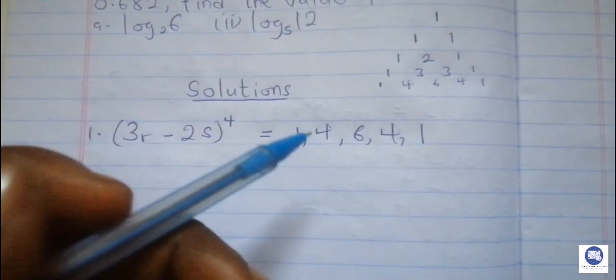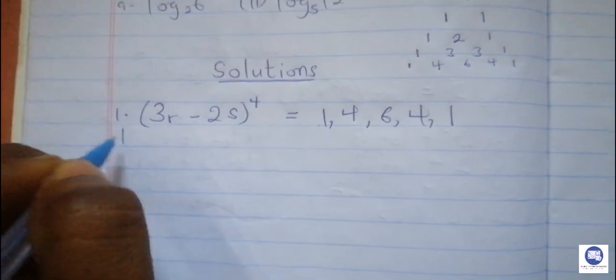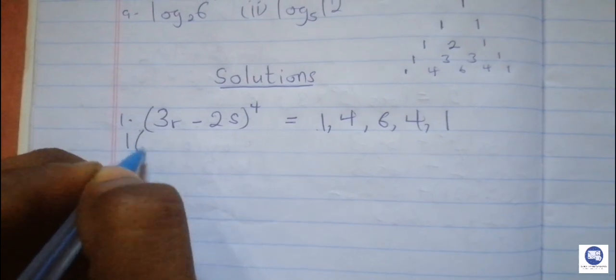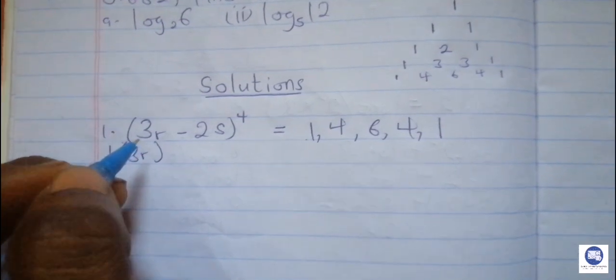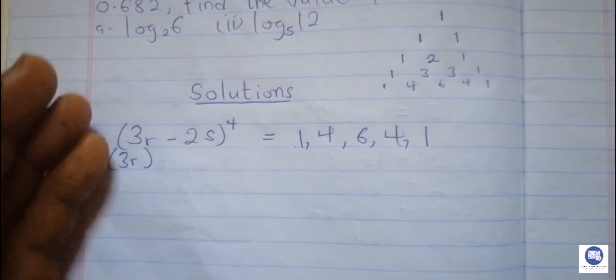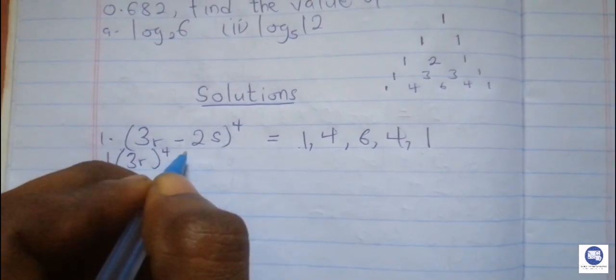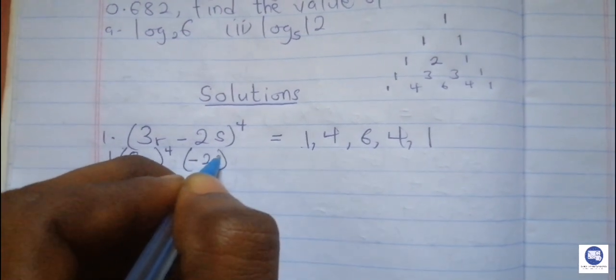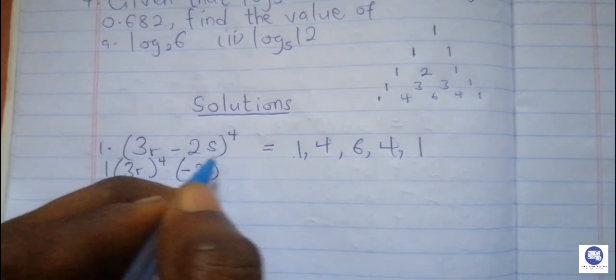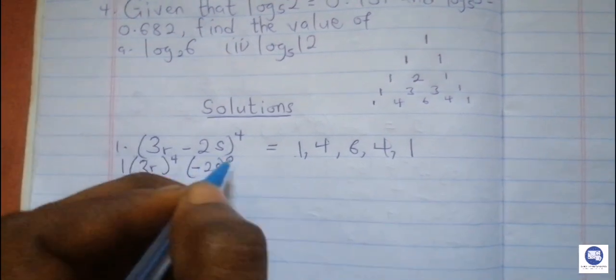We use these as our coefficients. Taking the first coefficient 1, the first expression is 3r. In polynomials there is the increasing power of one term and decreasing power of the other. So we begin with (3r) to the power of 4, then bracket negative 2s to the power of 0. Because 4 plus 0 gives you 4. Then we take the next coefficient, which is 4.